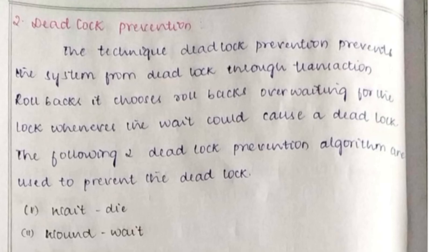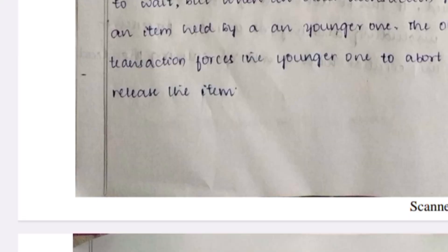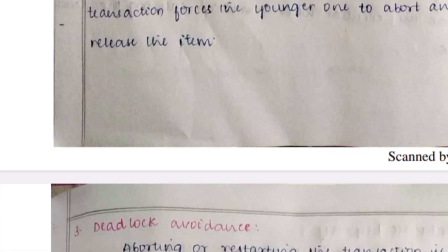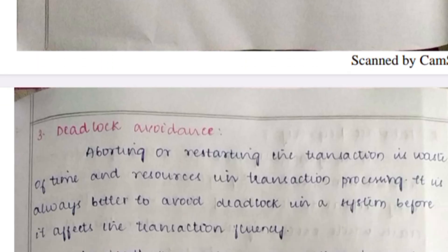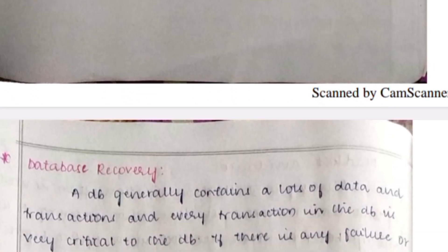Deadlock prevention uses two approaches: Wait-Die and Wound-Wait. These are the two types of deadlock prevention you need to explain. For deadlock avoidance, the system dynamically examines every request and detects whether it is safe to grant it or not.